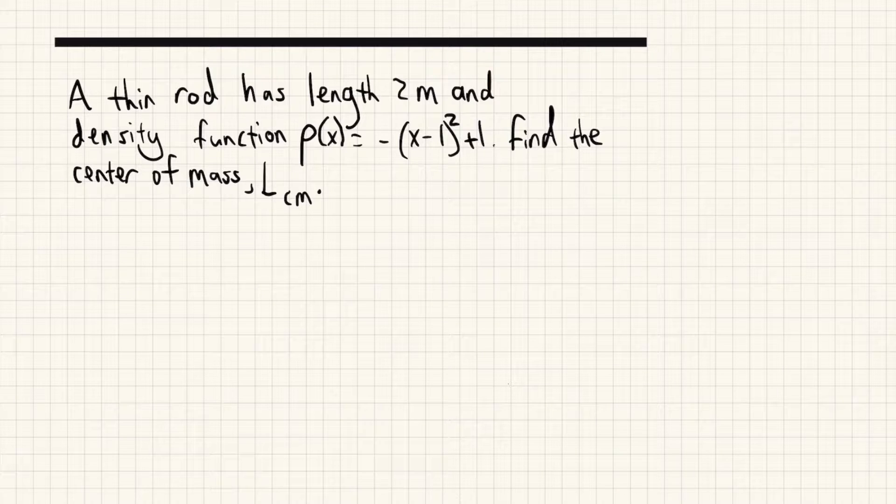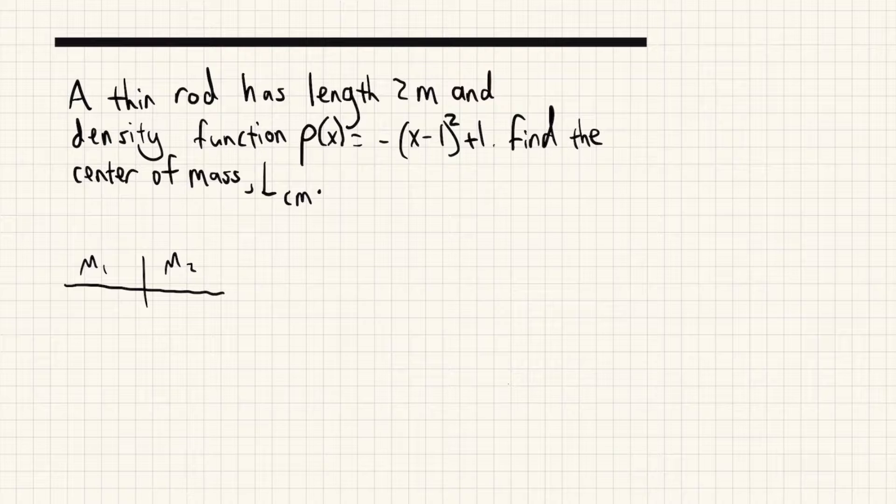Well, for any object, the center of mass is basically the point at which the mass on the left and the mass on the right is going to be the same. So if I have a rod and the density is the same throughout the object, that is the mass per unit length is the same throughout the object, then the center of mass will just be in the middle because the mass on the left is going to be equal to the mass on the right.